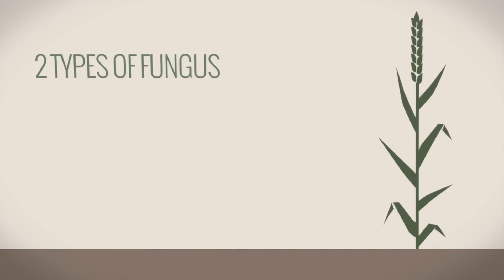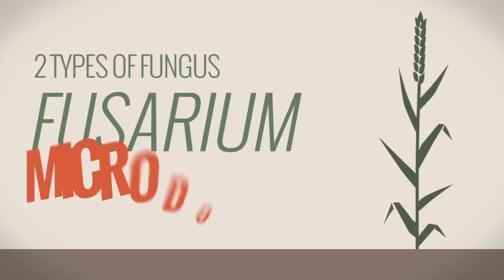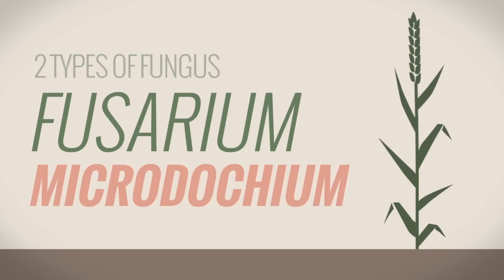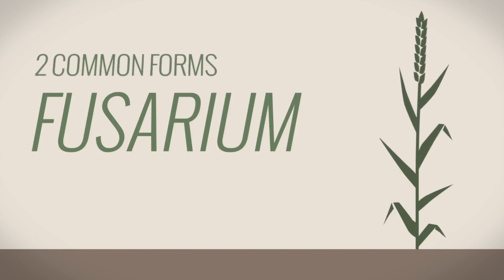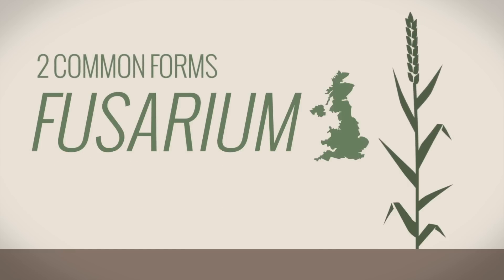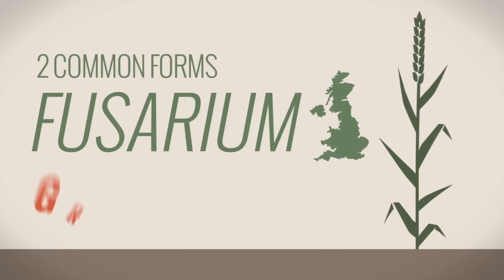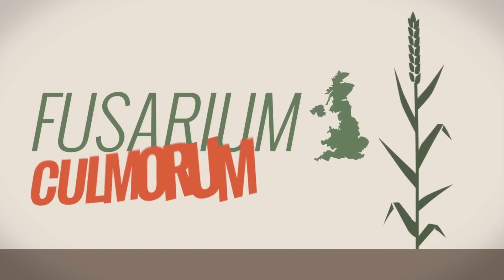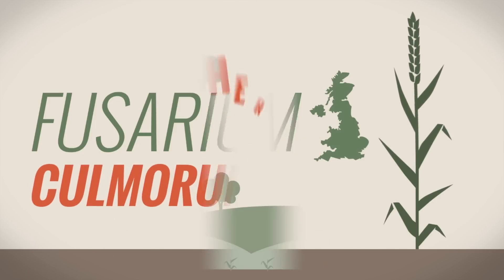FEB is a combination of two types of fungus: True Fusarium and Microdocium. Fusarium has two common forms in British wheat crops: Fusarium Graminearum and Fusarium Culmorum.